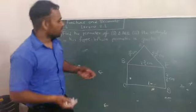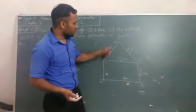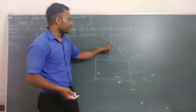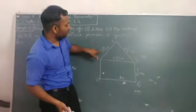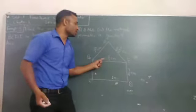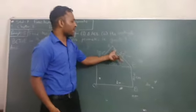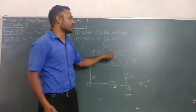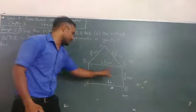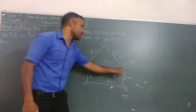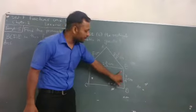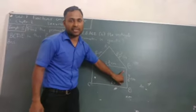First of all, see in the figure. This is your triangle ABE. Length AB is 5.2 cm, length BE is 2 and 3/4 cm, and length AE is 3 and 3/5 cm. And this is your rectangle BCDE, whose length is 2 and 3/4, and breadth is 7/6 cm.